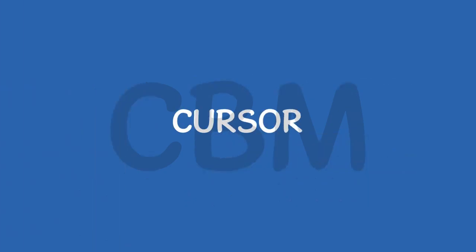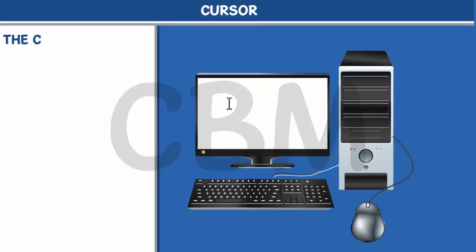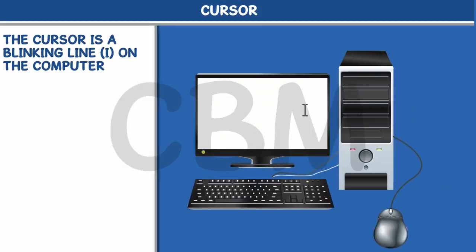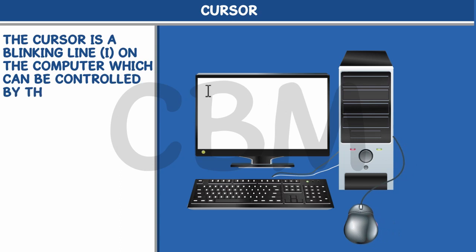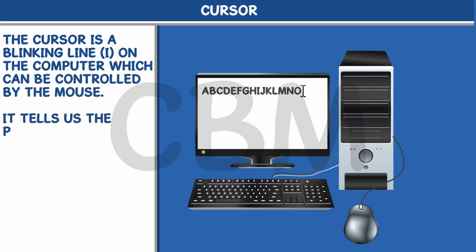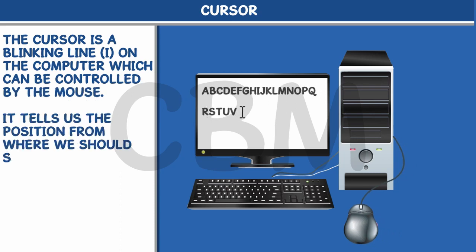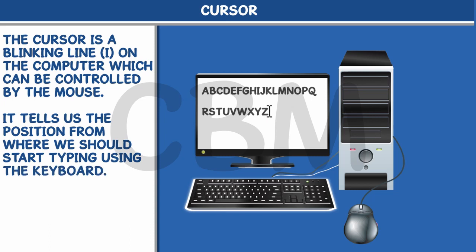Cursor. The cursor is a blinking line on the computer, which can be controlled by the mouse. It tells us the position from where we should start typing using the keyboard.